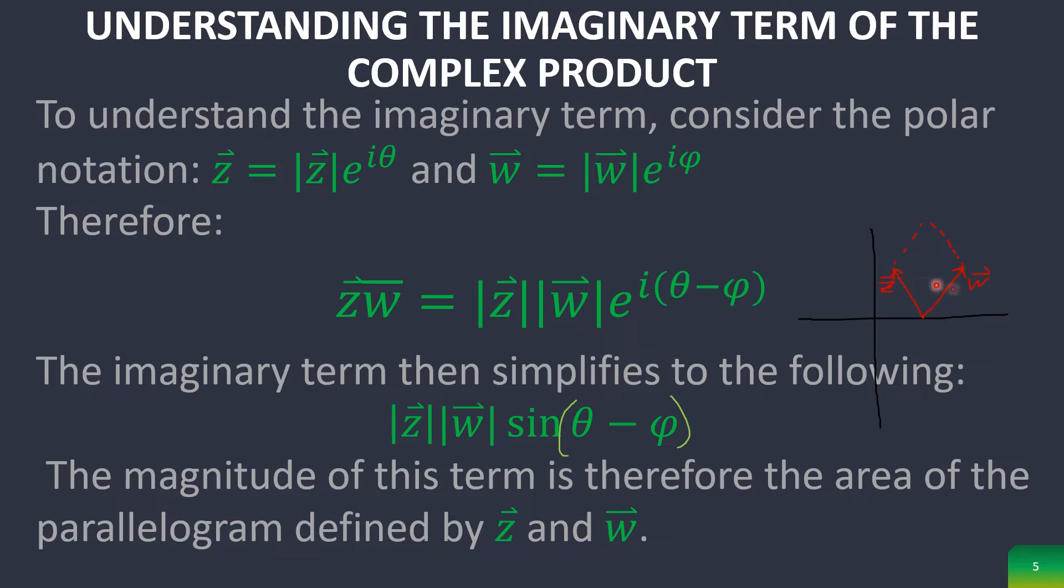This total angle right here is going to be theta, and then this little angle right here is going to be phi, and so this angle right there is going to be theta minus phi.